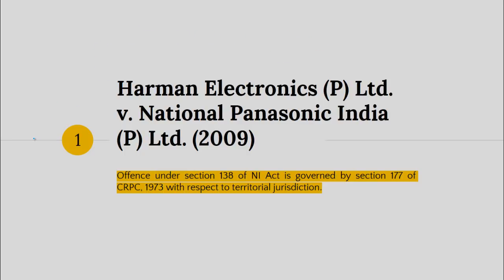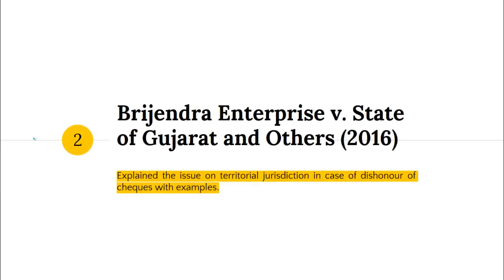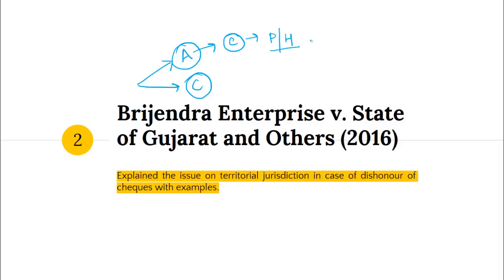Next important case is Brajendra Enterprise versus State of Gujarat and Others, 2016. Here the Supreme Court again explained the issue of territorial jurisdiction with various examples. The Court said a cheque can be presented in two ways: either through a payment account or by presenting it over the counter. If the cheque payment is being made through an account, then the court having jurisdiction will be the court where the payee or holder's bank branch is located. If payment is being taken by presenting the cheque at the counter, then the court having jurisdiction will be where the drawer maintains his bank branch.